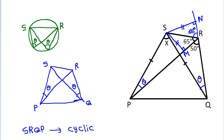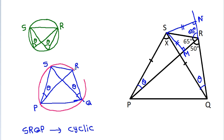That means S, R, Q, P will be cyclic. So we can draw a circle around S, R, P, Q.